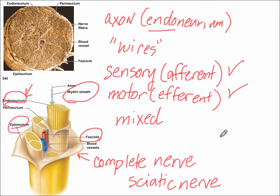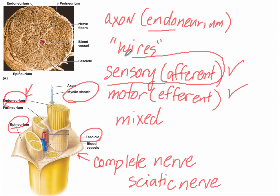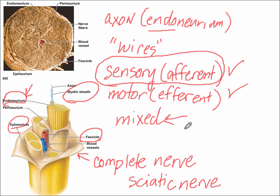There are some examples of nerves that only take information to the brain — those would be purely sensory. For example, a cranial nerve that would be purely sensory is the olfactory nerve; it takes sensory information from the nose to the brain. Others would be purely motor, and then many are going to be mixed, having both.